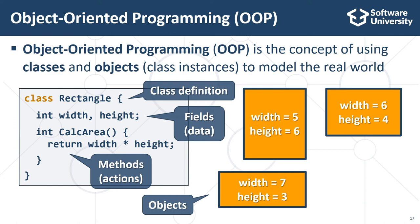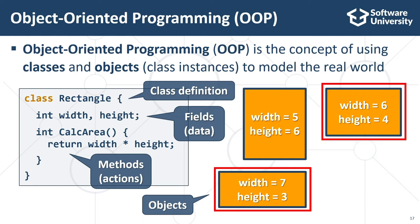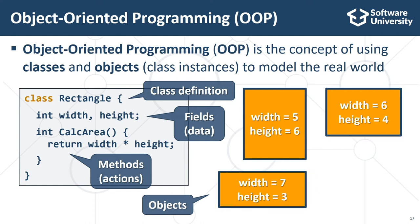The class holds the definition, or the specification, the model, the template for the objects. It defines the data fields, the methods and more details in some cases. Some classes don't hold data — they hold data definitions and operation definitions. Objects hold values for the data fields in the class. The objects of the class Rectangle hold data about a certain rectangle. Objects are information structures holding data. Typically, one class has multiple objects or instances.